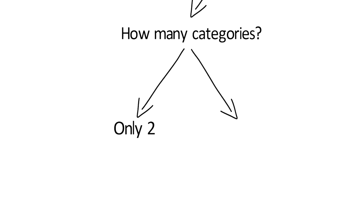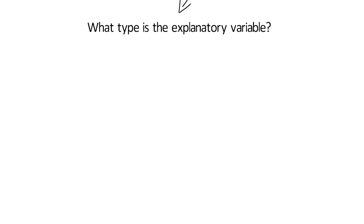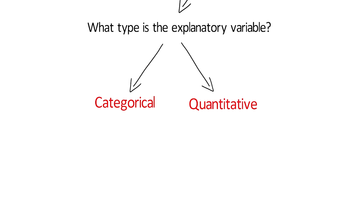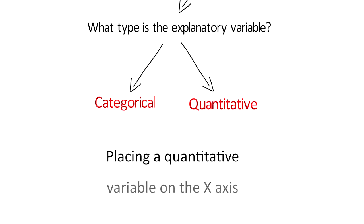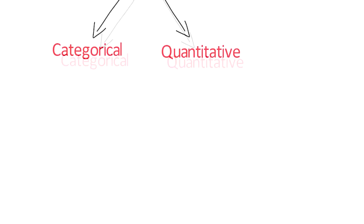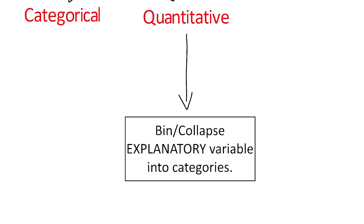The next question to ask is: what type is the explanatory variable? The explanatory or independent variable is number of cigarettes smoked per month. As we saw in the demonstration of histograms, this is a quantitative variable. Since it won't be visually meaningful to examine a bar chart with a quantitative explanatory variable on the x-axis when our response variable is categorical, it's important to bin our explanatory variable into categories before we start to graph, in order to construct a C2C — categorical to categorical — bar chart.